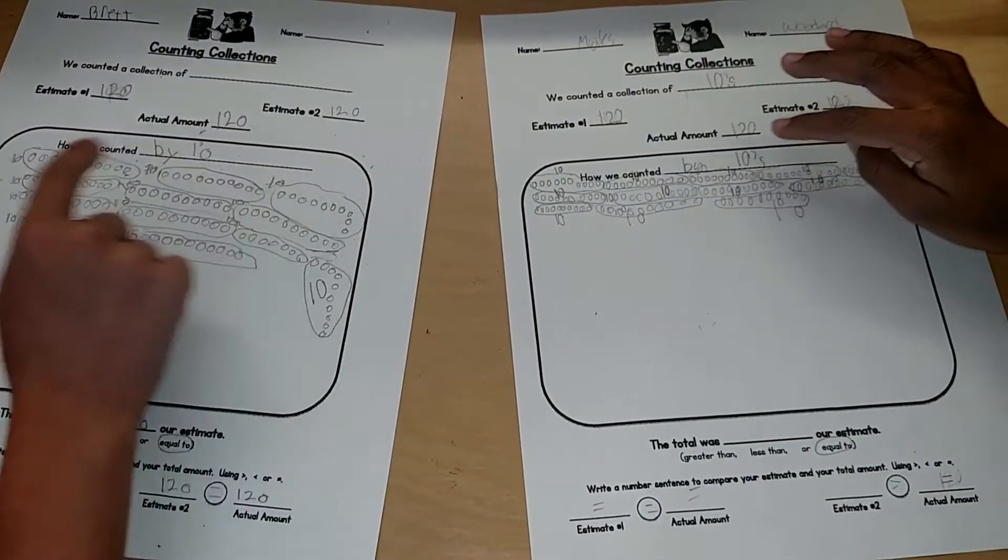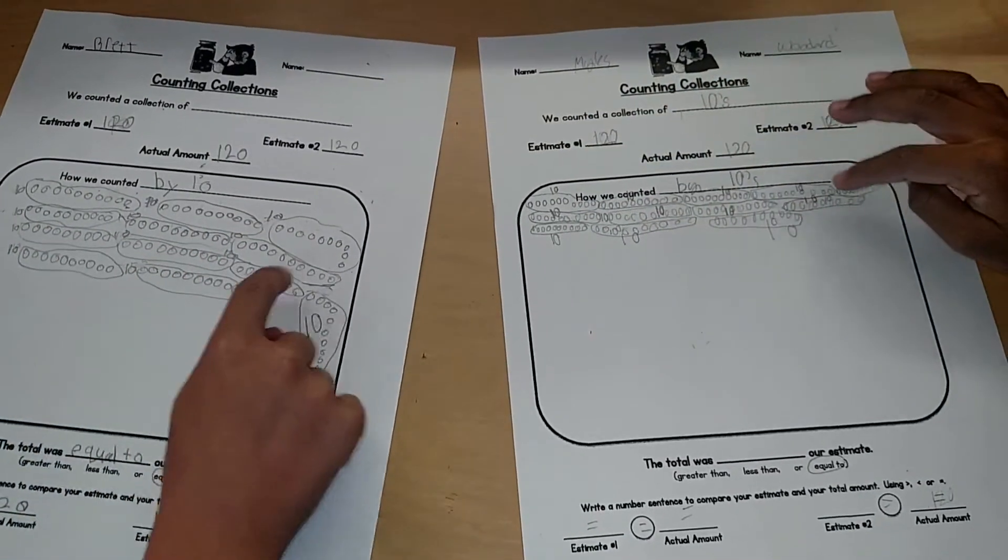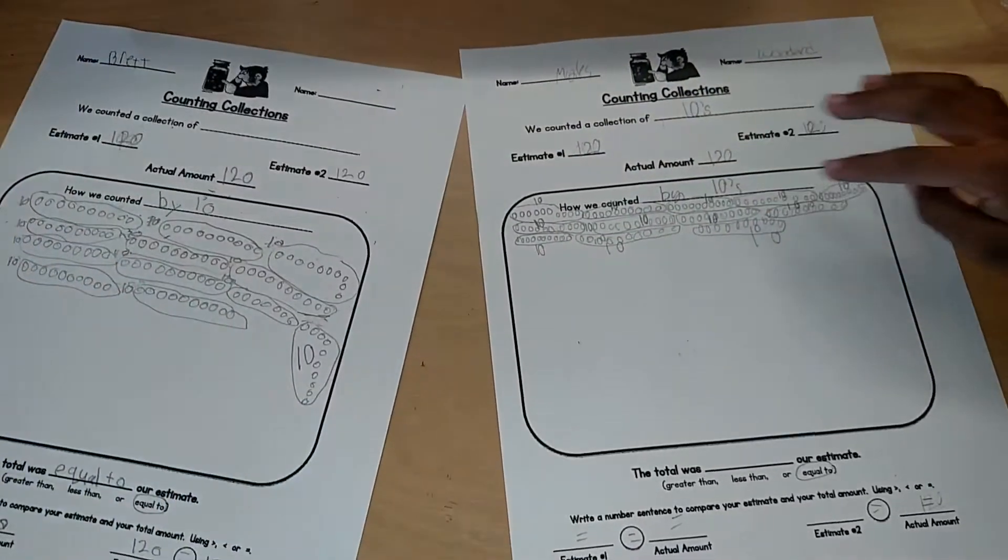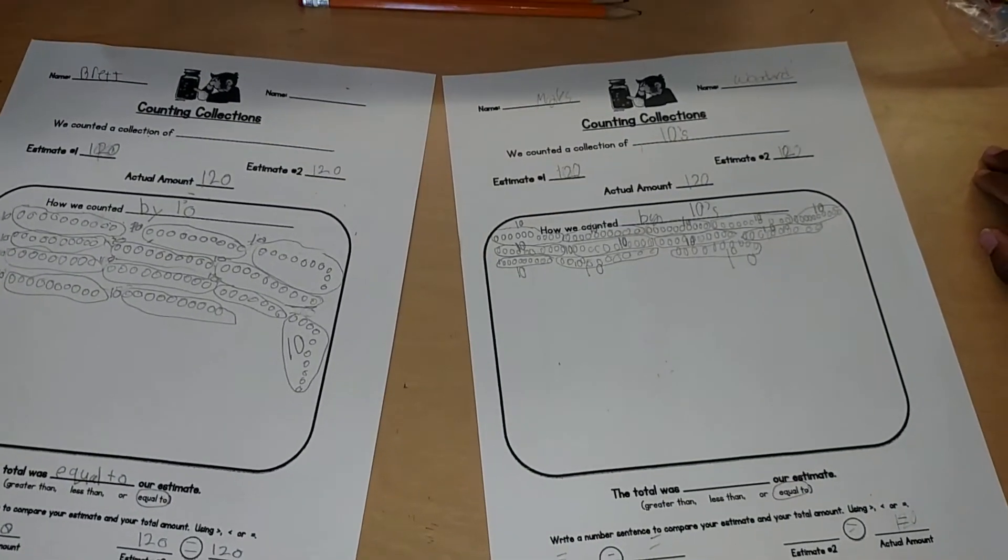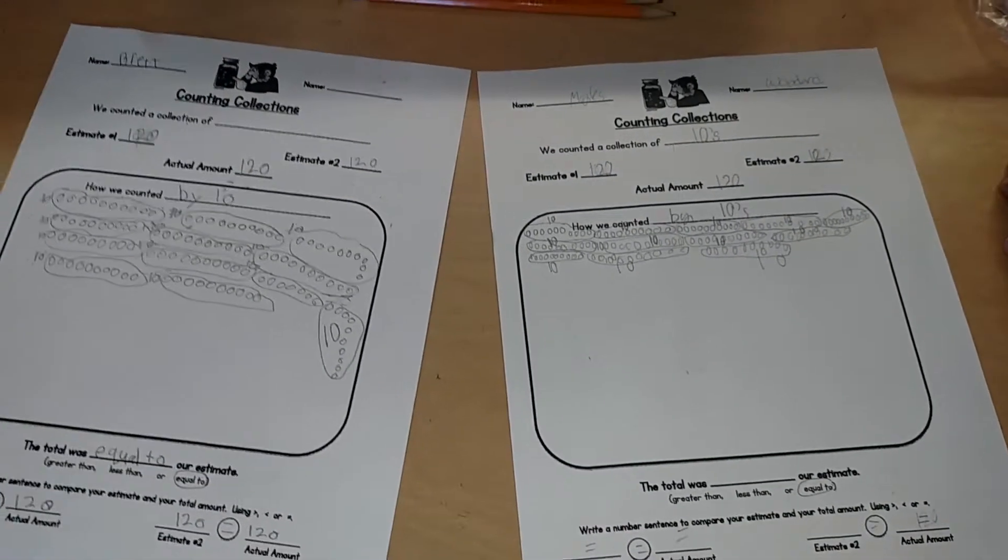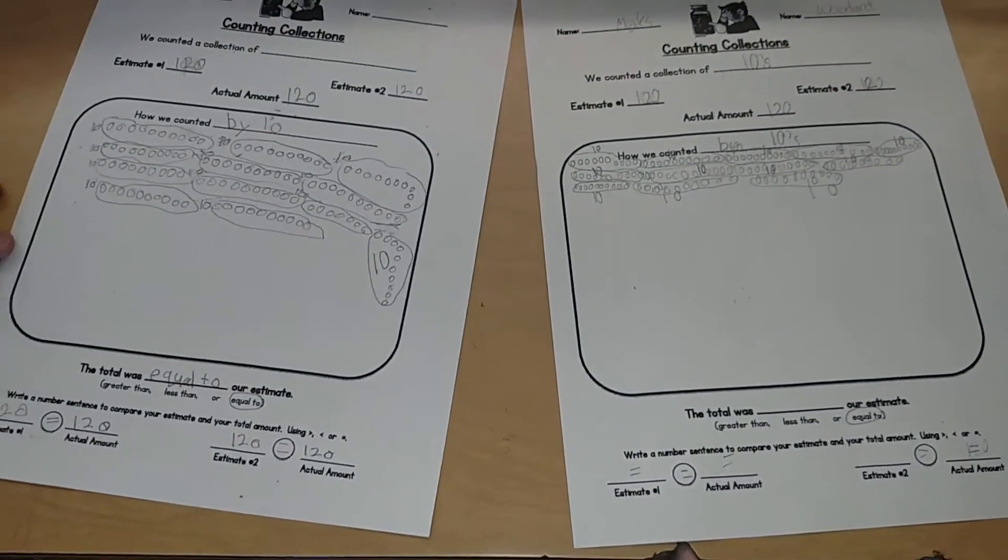1, 2, 3, 4, 5, 6, 7, 8, 9, 10, 11, 12. So if you take 12 groups and there's 10 in every group, how many are there all together? 120. 120.